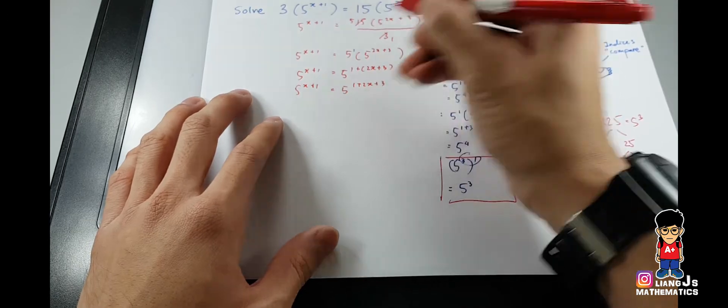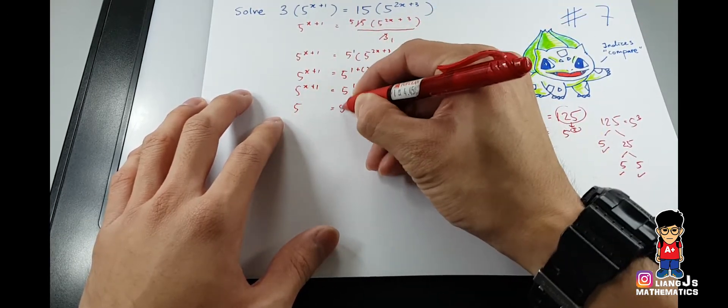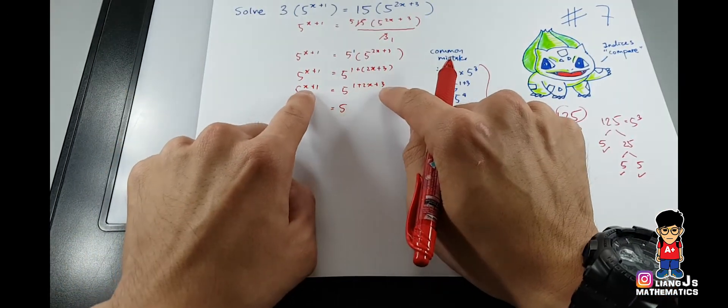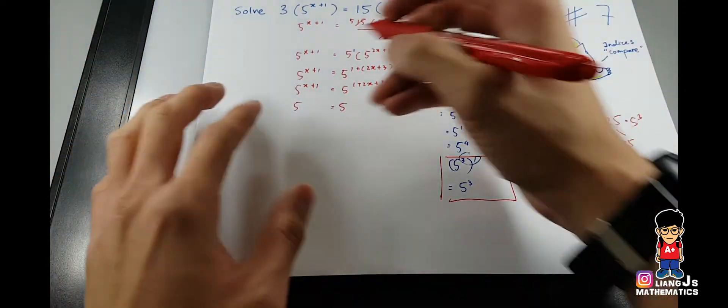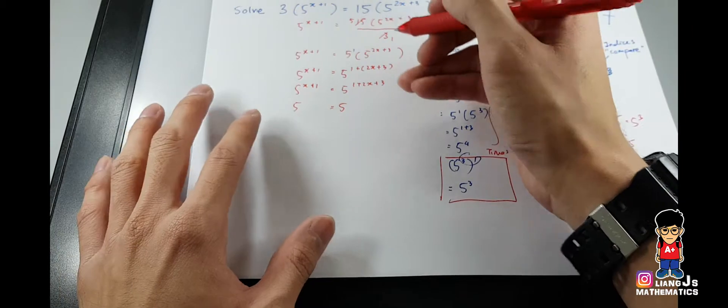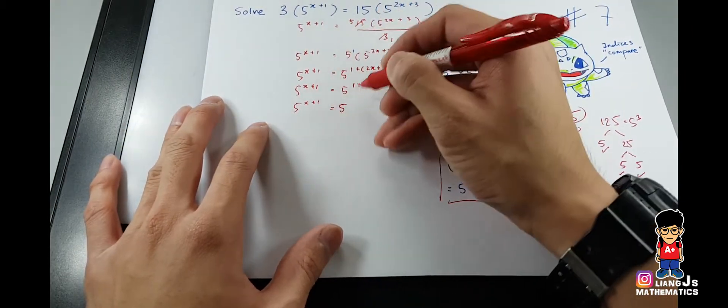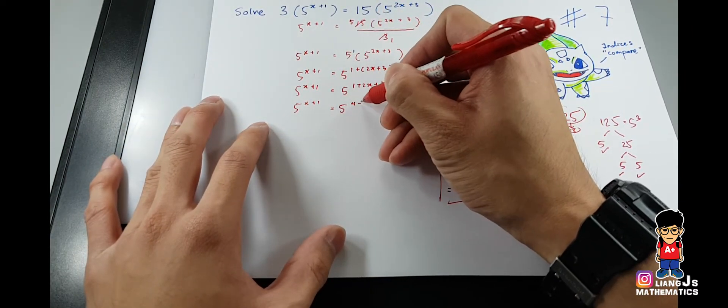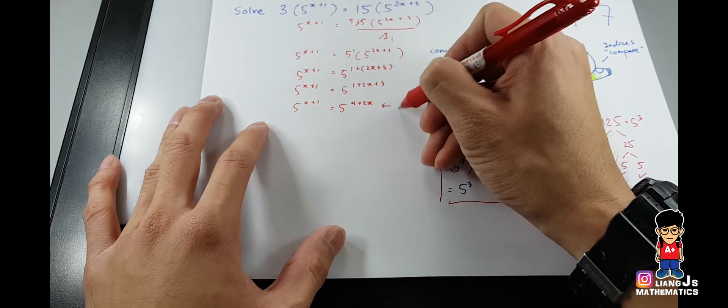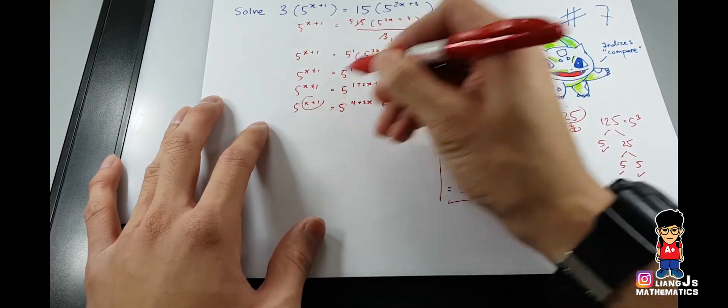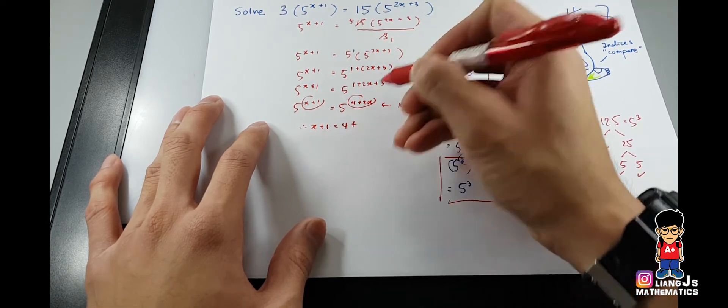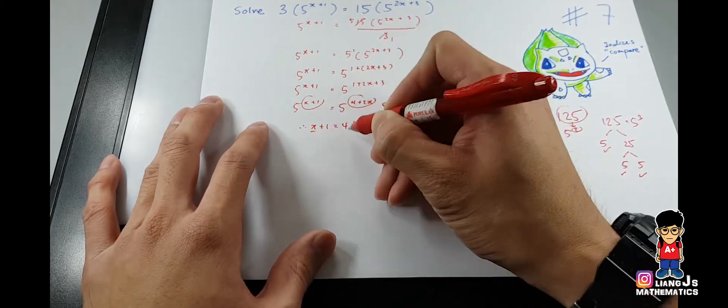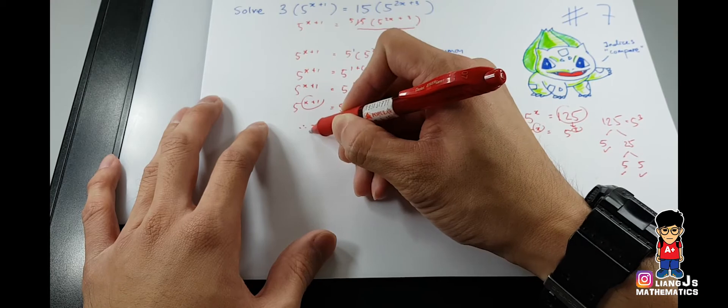So five five, do you notice same base and then different index. Then now you can compare the index. Okay, so what I do here is I will just simplify it first. Okay so there is a lot of extra working here, so this one if you want to skip if you can. So compare them, therefore x+1 equals to 4 plus with 2x.